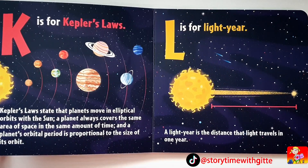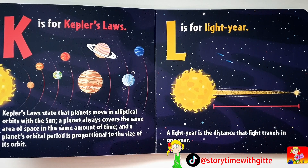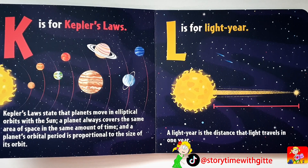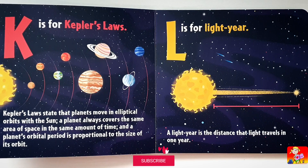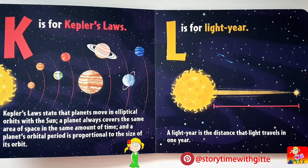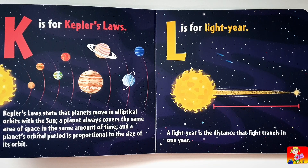K is for Kepler's Laws. Kepler's laws state that planets move in elliptical orbits with the sun. A planet always covers the same area of space in the same amount of time. And a planet's orbital period is proportional to the size of its orbit. L is for Lightyear. A lightyear is the distance that light travels in one year.